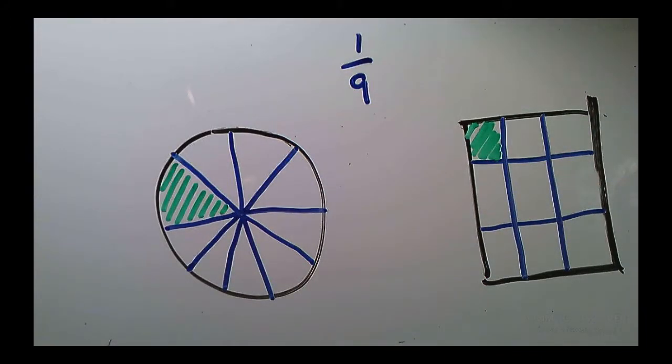Now, at this point, I would say the rectangular model is clearly becoming a lot simpler and a lot clearer in terms of representing a fraction like 1 ninth. The circle is still possible, but we're fast approaching the point where cutting a circle into more than nine equal pieces becomes really challenging.